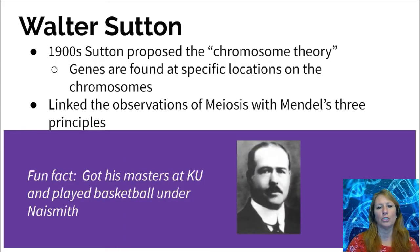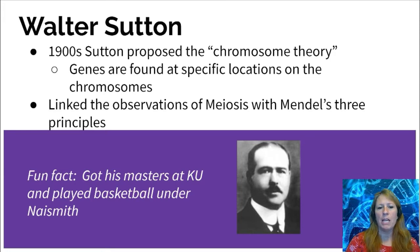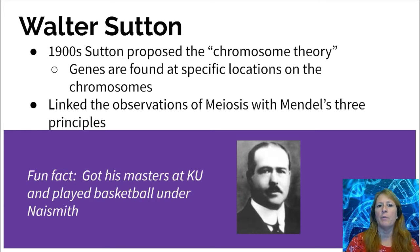Our second scientist is Walter Sutton, who worked in the 1900s after Mendel. He took Mendel's principles, laws, and observations of meiosis and came up with the chromosome theory, discovering that genes are located at specific locations on chromosomes for each trait. He took very extensive notes based on Mendel's work to propose the chromosome theory. Fun fact for KU fans: he attended KU and actually played basketball under Naismith.